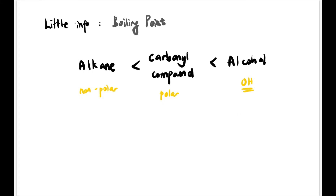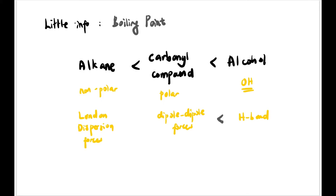Alkane is non-polar; alcohol has an OH so it has hydrogen bonding; carbonyl has dipole-dipole forces because it is polar; alkane has London dispersion forces which is the weakest because it is non-polar. So in order of strength: hydrogen bonding is the strongest, followed by dipole-dipole, and the weakest is London dispersion.